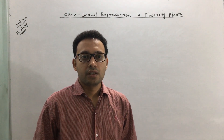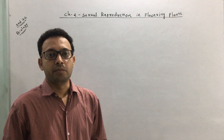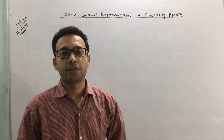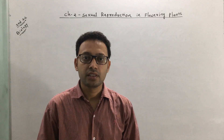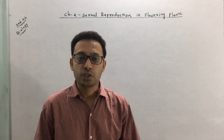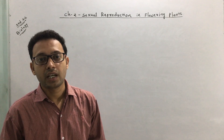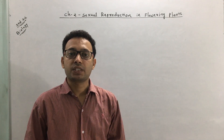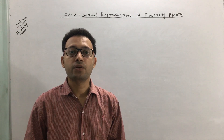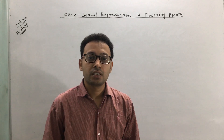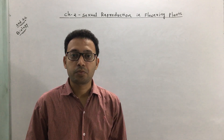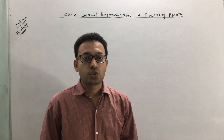Good morning dear students. In the previous week we discussed Chapter 2: Sexual Reproduction in Flowering Plants. We covered the structure of the flower, how male and female gametes are produced by stamen and carpel, microsporogenesis and megasporogenesis, pollination and its agents including biotic and abiotic factors, artificial hybridization, double fertilization, endosperm formation, and embryo formation.